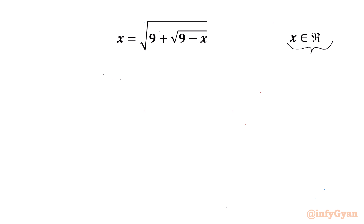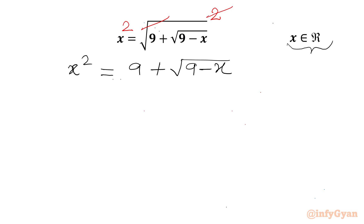I will consider squaring both sides, as we have a square root on the RHS. The square root and square will cancel. So we can write our equation as x squared equals 9 plus square root of 9 minus x. Now we will take this 9 to the LHS, so x squared minus 9 will equal square root of 9 minus x.